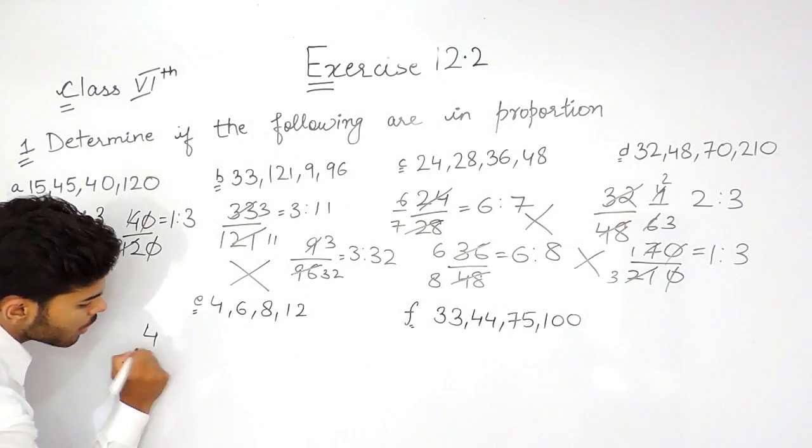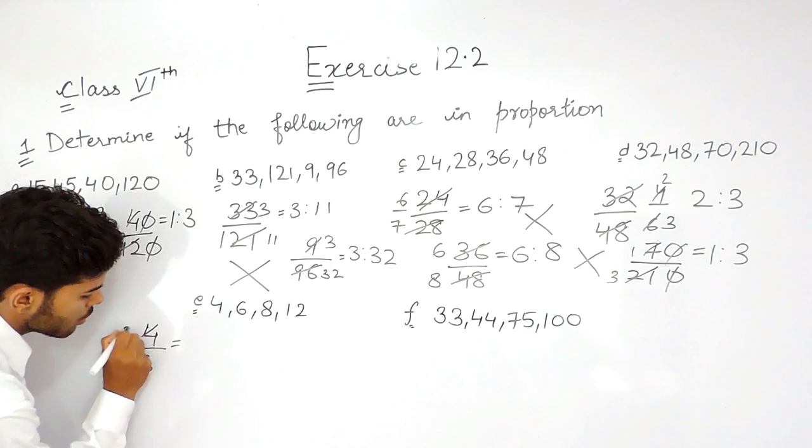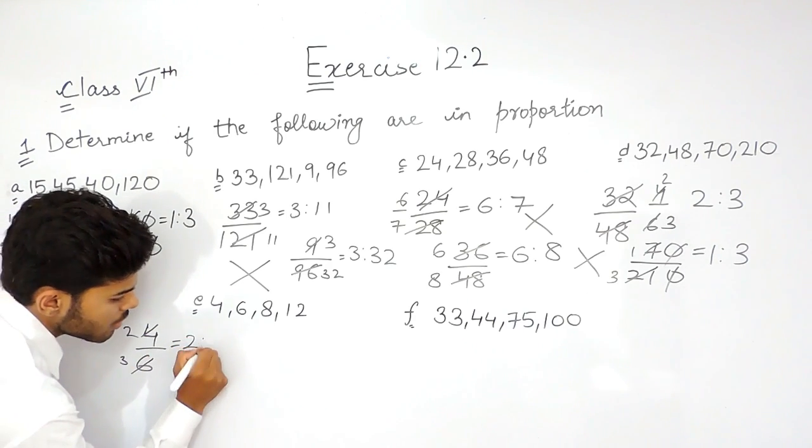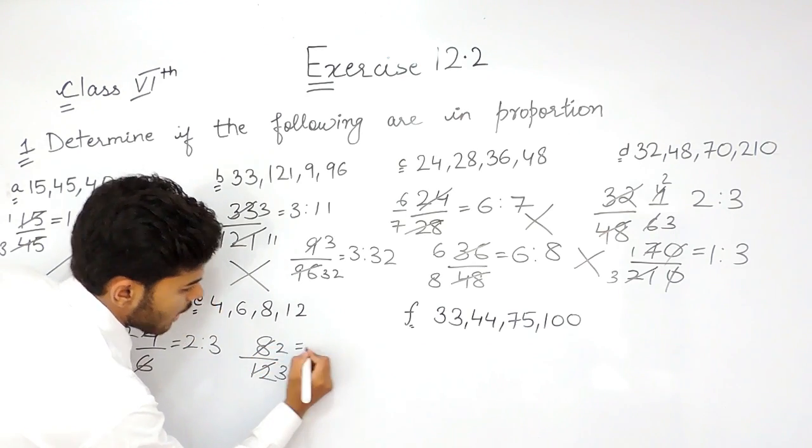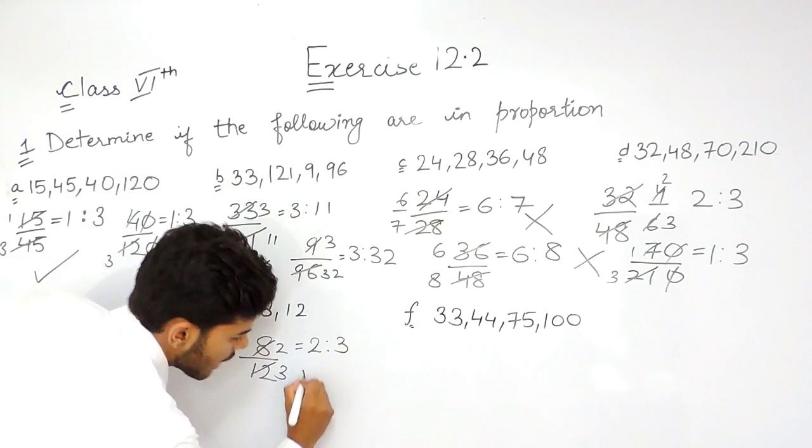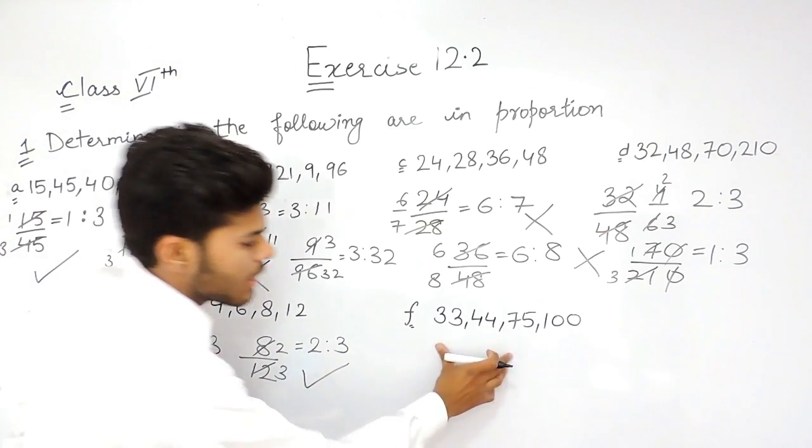Now this one, 4 upon 6. That is 2 times 2, 3 times 2, which is 2 ratio 3. And 8 upon 12, that's 4 times 2, 4 times 3, which is again 2 ratio 3. That means this is in proportion. And in the last one,